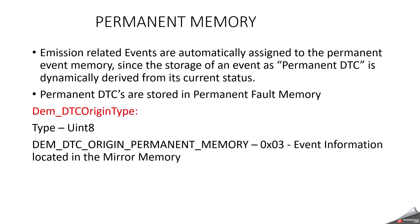Permanent Memory: Emission related events are automatically assigned to the permanent event memory, since storage of an event as a permanent DTC is dynamically derived from its current status. Permanent DTCs are stored in permanent fault memory. The enum is DEM_DTC_ORIGIN_PERMANENT_MEMORY with value 0x03. These are all the details about how DEM event memory is handled whenever a fault has occurred.